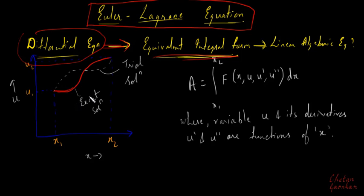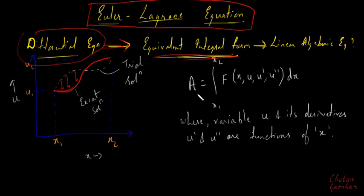We had already seen this: if this is the exact solution, and if this is what is called the variation, then our aim will be to minimize this variation. That is, if this is the functional A, which is a function of u and u'...